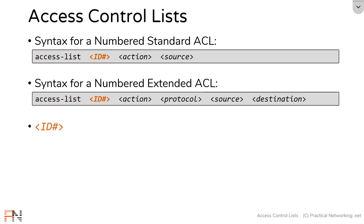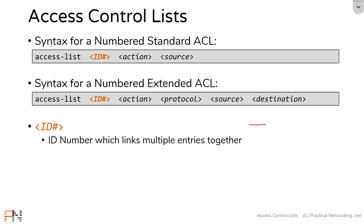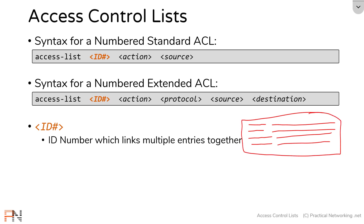Following that, you're going to provide an ID number. This ID number is what links multiple access list entries together. Each access list entry is an ID number and then a match statement — multiple entries share the same ID number. That's how you link multiple entries into the same access list. Each individual entry is sometimes referred to as an ACE, which stands for access control entry, and a series of ACEs creates an access control list.